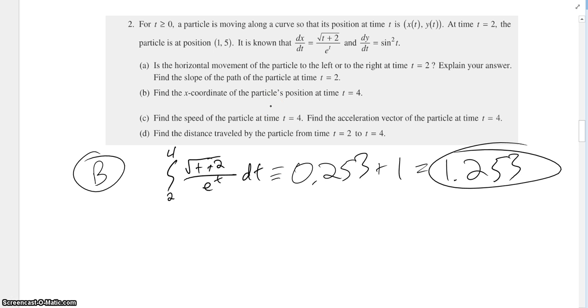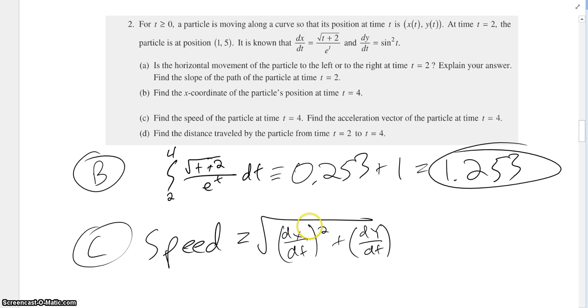Moving on to c, find the speed of the particle at t equals 4 and then find the acceleration of the particle. Alright, so if you remember, the speed vector, or the equation to find the speed is straight up just speed equals the square root of the speed of the x values and the speed of the y values instantaneously at t equals 4. So what we're going to have to do is find dx/dt at t equals 4 squared plus dy/dt at t equals 4.